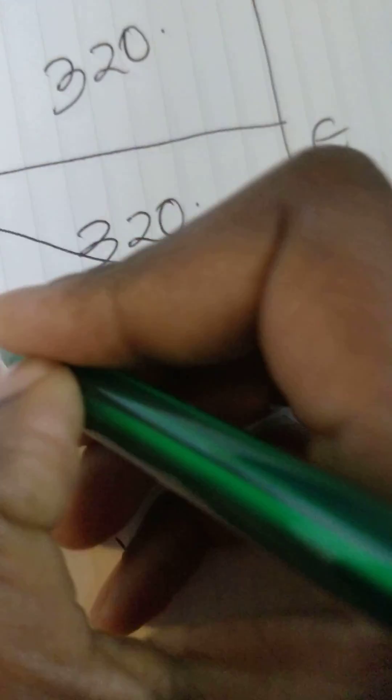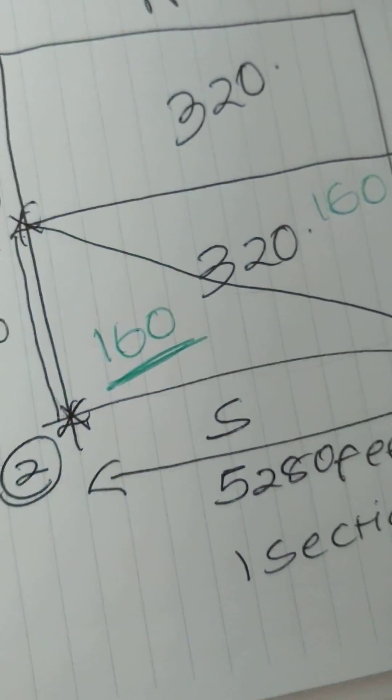And half here is 320. If you take half and half, you get 160 on this side, 160 on this side. That's why your answer is 160.